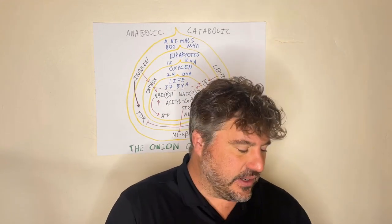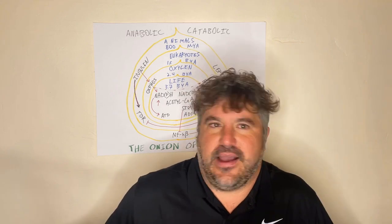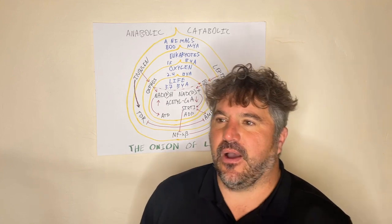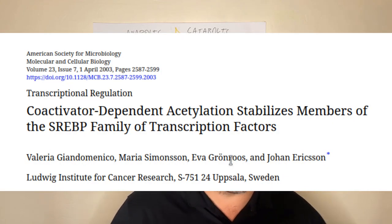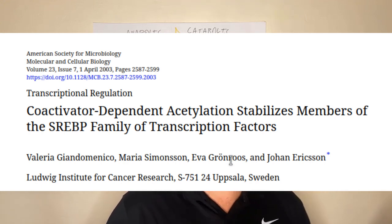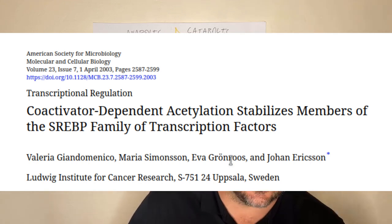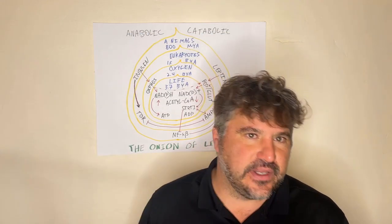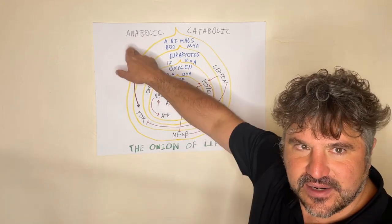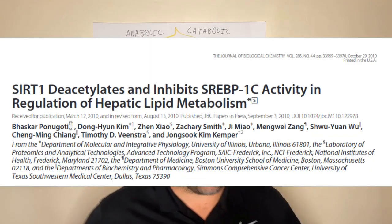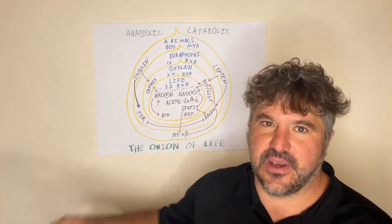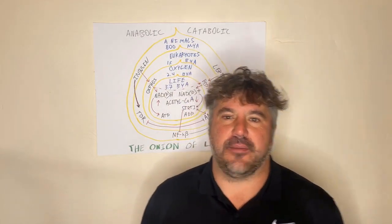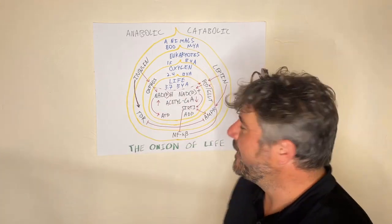Interestingly, back in 2003 it was reported that SREBP1 — the main transcription factor known to activate SCD1 — could be acetylated, which is anabolic mode in the cell. Then in 2010, a year before that 2011 paper, it was reported that SIRT1, on the catabolic side, actually deacetylates SREBP1 and turns it off. But since that research was done by molecular biologists not focused on basic biochemistry, they missed all of that, failing to connect it to the bottom-level mechanism.